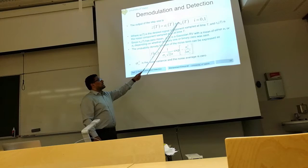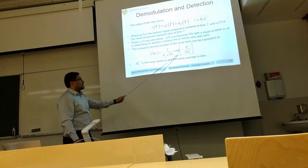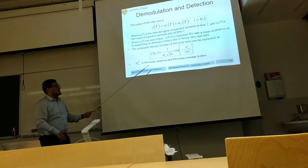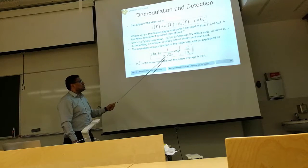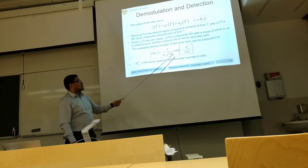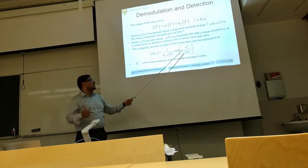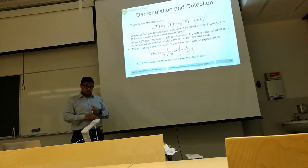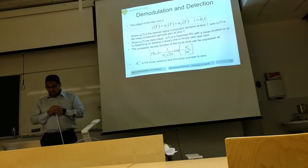This noise is Gaussian with zero mean, represented by the probability density function: (1 / (σ0 √(2π))) × exp(−N0² / (2σ0²)), where σ0 is the standard deviation and σ0² is the variance — or the average power — of the additive noise.